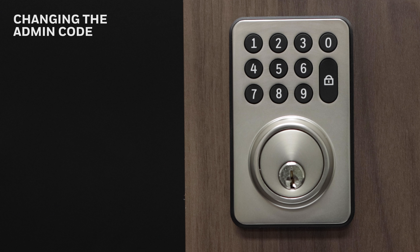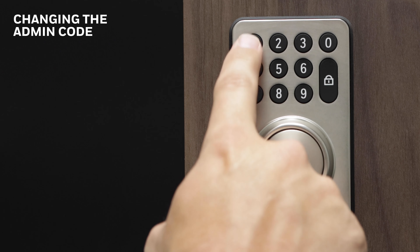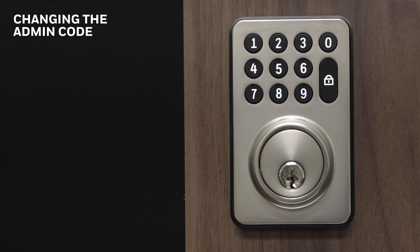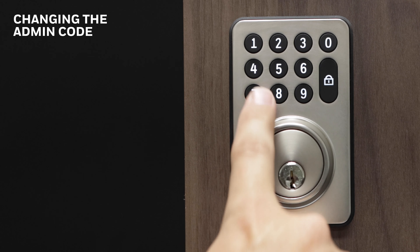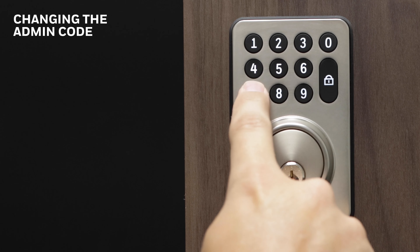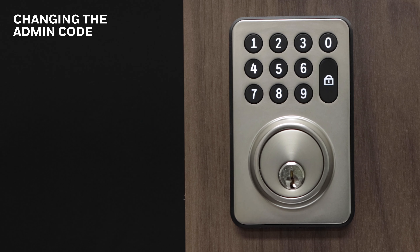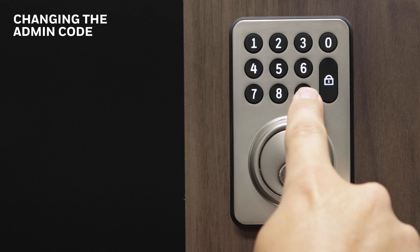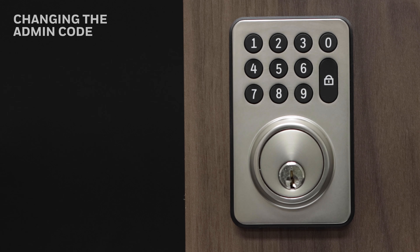Changing the factory code or an old admin code to a new admin code: Input the admin code — the factory default is 1-2-3-4-5-6 — and press lock. Press 4 and lock to access the admin menu. Input your new six-digit code and press lock. Confirm by inputting your six-digit code and pressing lock again. The green light will flash to confirm success.